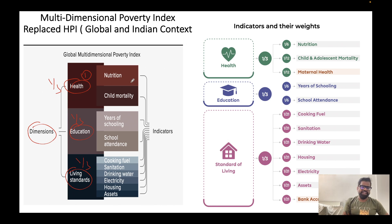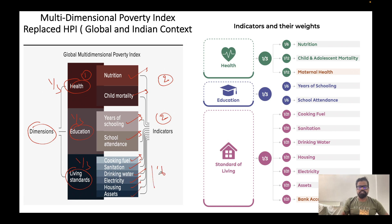Within the health dimension, there are two indicators: nutrition and child mortality. In education, there are two indicators: years of schooling and school attendance. In living standards, there are six indicators: cooking fuel, sanitation, drinking water, electricity, housing, and assets. So the global MPI has three dimensions and 10 indicators in total.